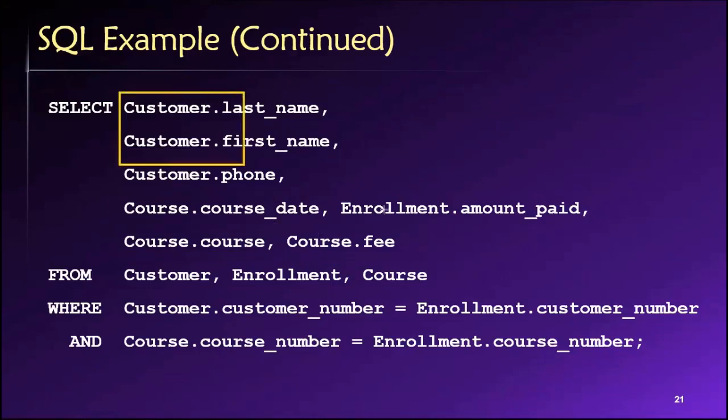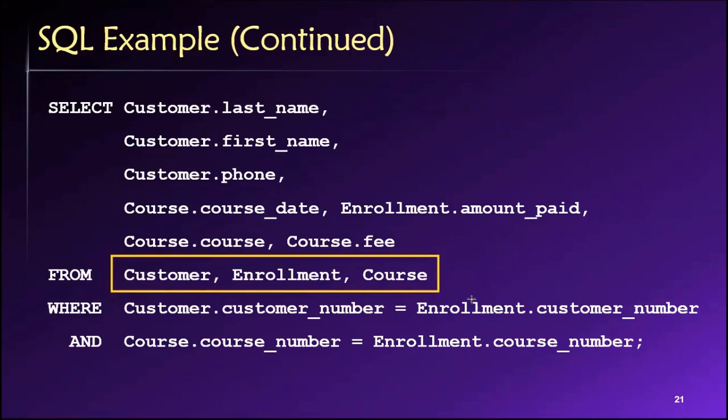So thus far, it's just, here's what we want in the results. Here's where you need to look for it. And then we just need to tell the database how to link these three tables together. And again, in the relational database world, we do that using matched pairs of values.